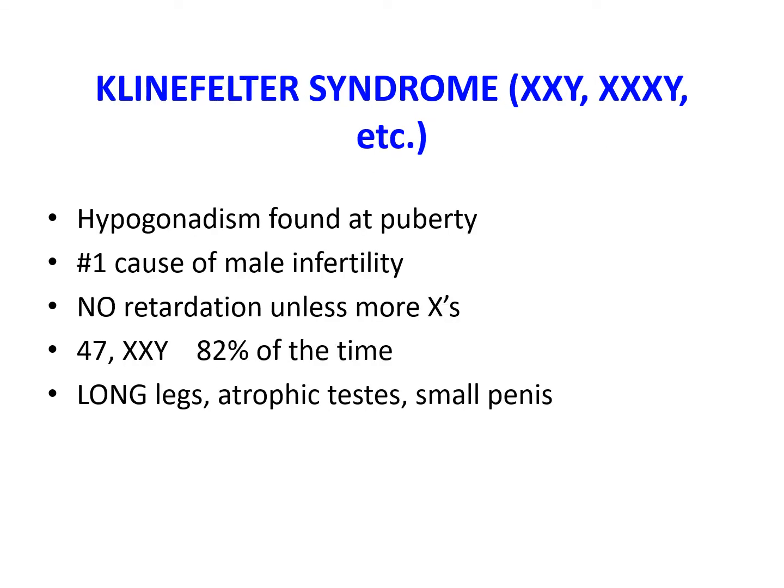Klinefelter syndrome, or XXY/XXXY, is defined as male hypogonadism that occurs when there are two or more X chromosomes and one or more Y chromosomes. It is one of the most frequent forms of genetic diseases involving the sex chromosomes as well as one of the most common causes of hypogonadism in males. The clinical features of Klinefelter syndrome can be attributed to two major factors: the aneuploidy and the impact of increased gene dosage by the supernumerary X, and the presence of hypogonadism.